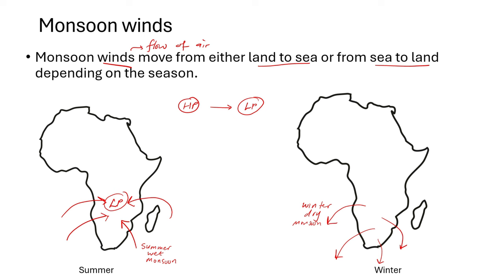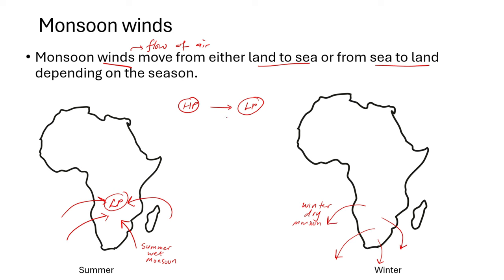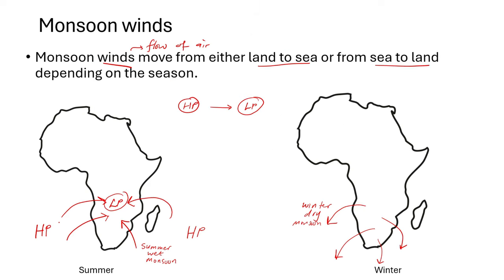On the adjacent sea, there are high pressure cells, meaning cold air is sinking at the seas and oceans. When cold air descends, a high pressure cell develops at that area. So there are high pressure cells at the seas. Warm moist air then flows from the Indian Ocean to the interior, producing rainfall during summer on the land — this warm moist air is the summer wet monsoon.